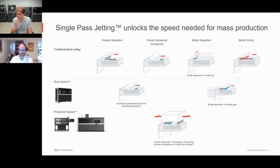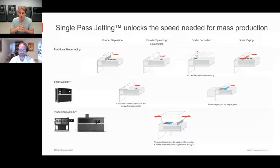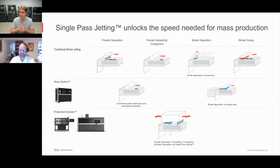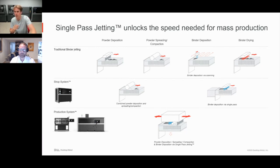Question: would this work with polymer powders with a high melting temperature? There is definitely research being done with composites and other materials that are potentially compatible. The actual binder jetting process is similar to what HP does in Multi Jet Fusion, but rather than going into a furnace, they do all the drying and fusing inside the printer itself. There is definitely interest in doing this with polymers as well.